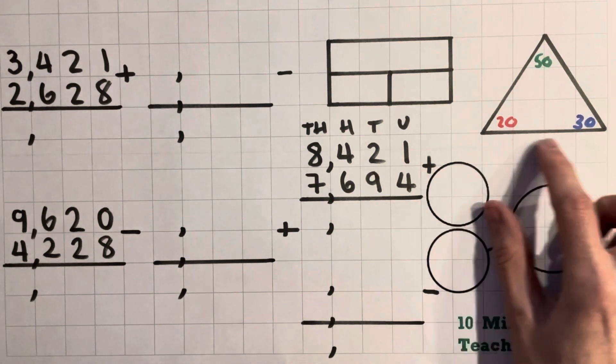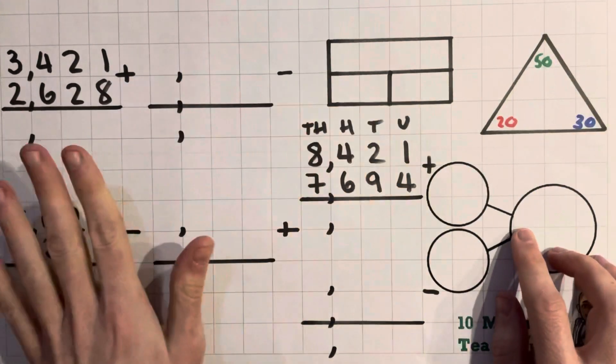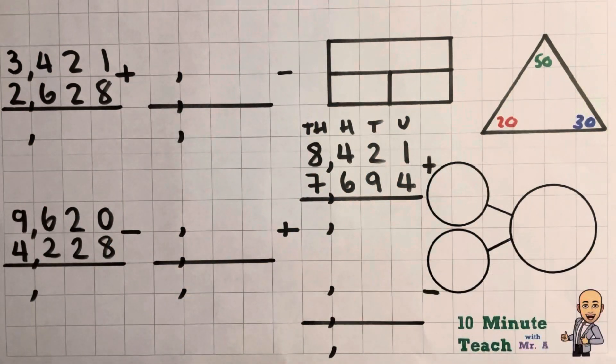Now I've got 20, 30 and 50 and I just want you to see the relationship between these numbers because this will make everything else make sense. Now I can actually write out four different number sentences based on these three numbers. So let's have a quick look.